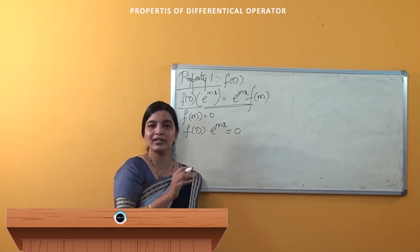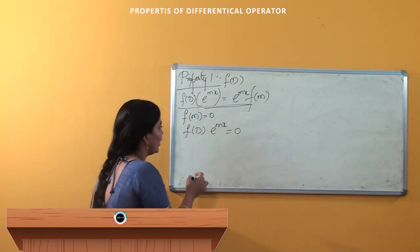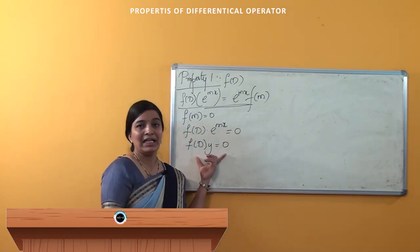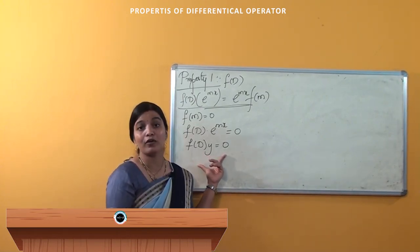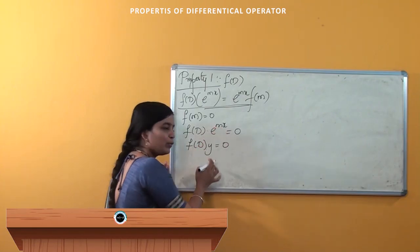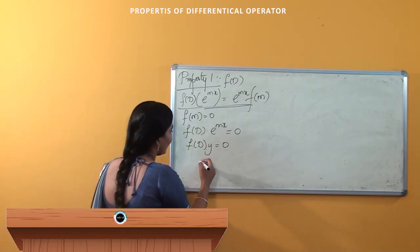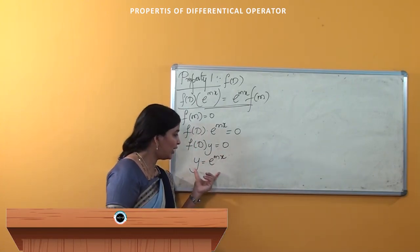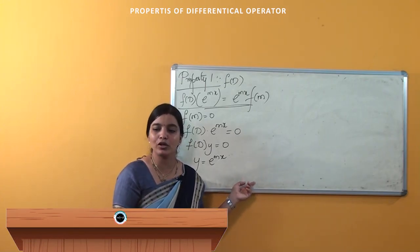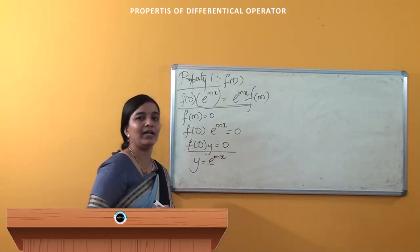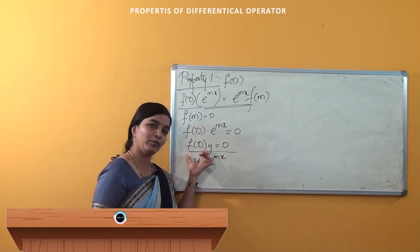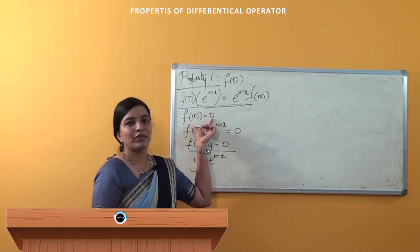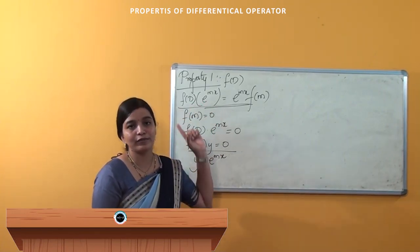You know the linear homogeneous differential equation of order n is f(D)·y = 0. When I compare these both equations, I can write y = e^(mx). So e^(mx) is the solution of f(D)·y = 0, where f(D) is a polynomial of degree n and f(m) = 0, that is m is a root of f(D).